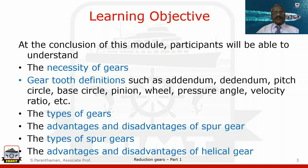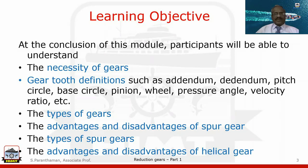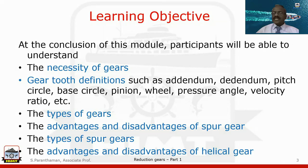The necessity of gears. The gear tooth definitions such as addendum, dedendum, pitch circle, base circle, pinion, wheel, pressure angle, velocity ratio, etc. What are the types of gears? The advantages and disadvantages of spur gear. In spur gear itself there are types — what are the types of spur gears?